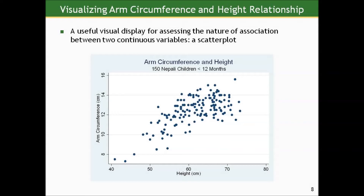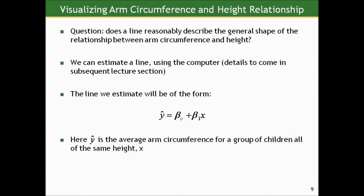We've plotted 150 points on a two-dimensional graph tracking arm circumference and height for 150 children. For each point, a vertical drop to the x-axis gives that child's height, and a horizontal line to the y-axis gives that child's arm circumference. Does a line reasonably describe the general shape of the relationship? It's not going to be perfect — there's still variation around the line — but the trend is pretty clear: as one goes up, the other tends to as well. Based on that scatter plot, fitting a line seems like a reasonable thing to do.